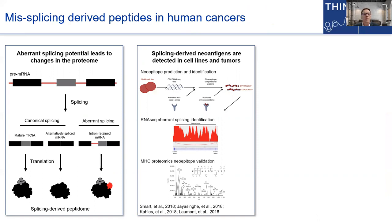The basis for this idea is straightforward. Normal splicing creates an enormous amount of proteomic diversity through the inclusion or exclusion of exonic sequences, which is critical in gene regulation and normal development. But in the context of cancer, dysregulation of splicing opens the opportunity for not only aberrant alternative splicing but also for many introns to be retained in mRNAs and subsequently translated into aberrant proteins that have never been seen by the immune system. There's been quite a bit of exciting work combining RNA-seq, proteomics, MHC-enrichment proteomics, and computational approaches to annotate what types of neoepitopes might emerge from these altered proteomes of cancer cells.